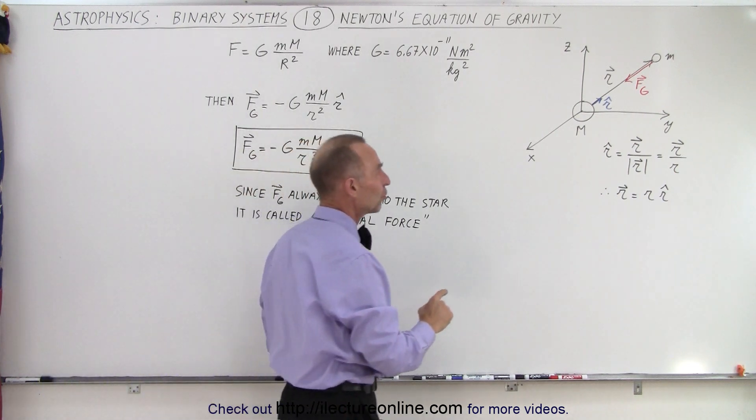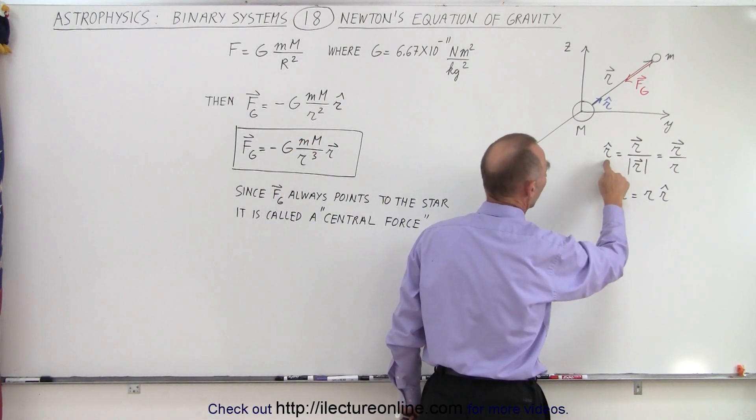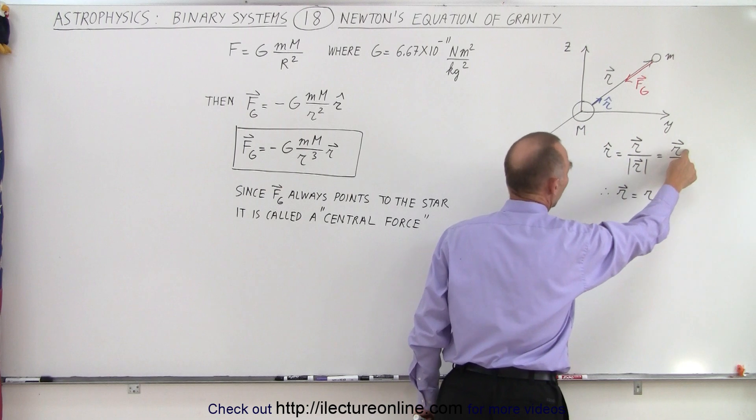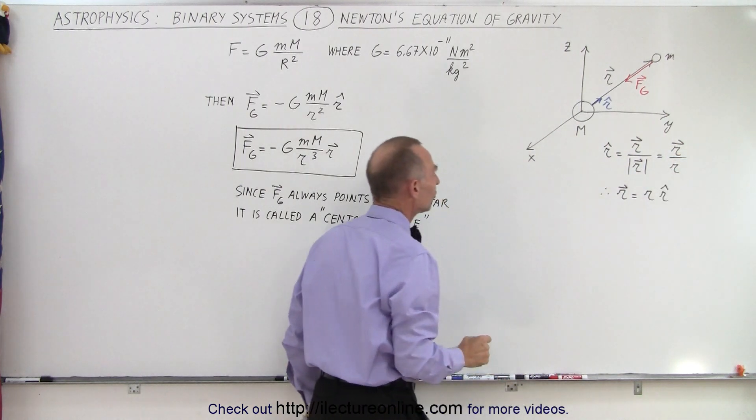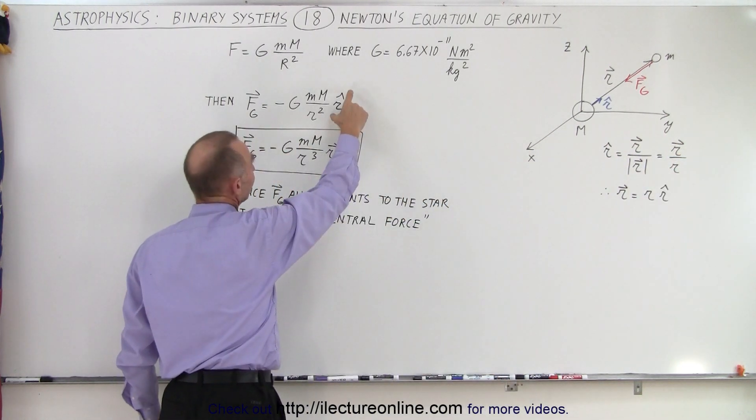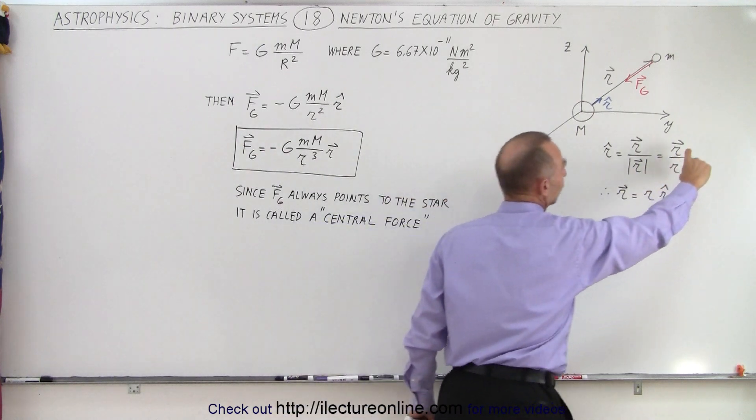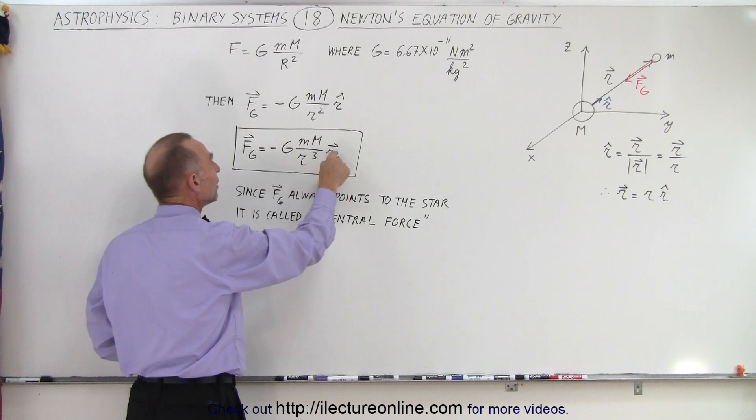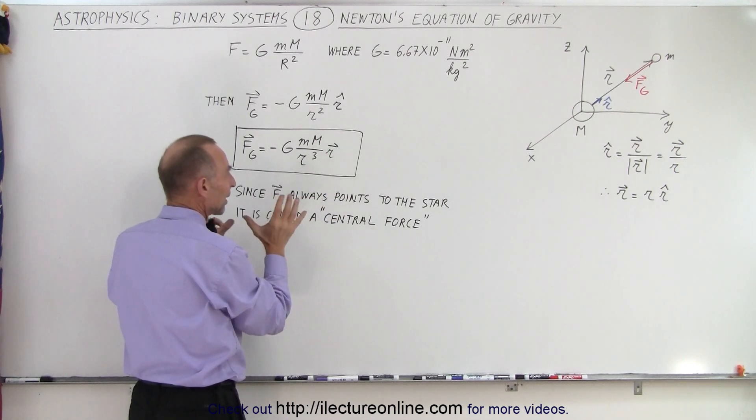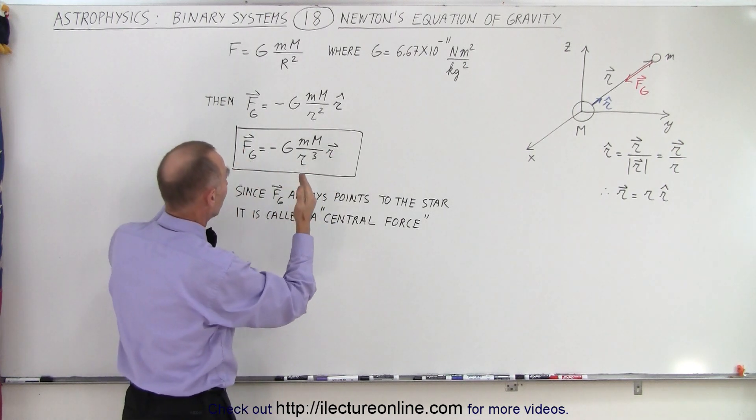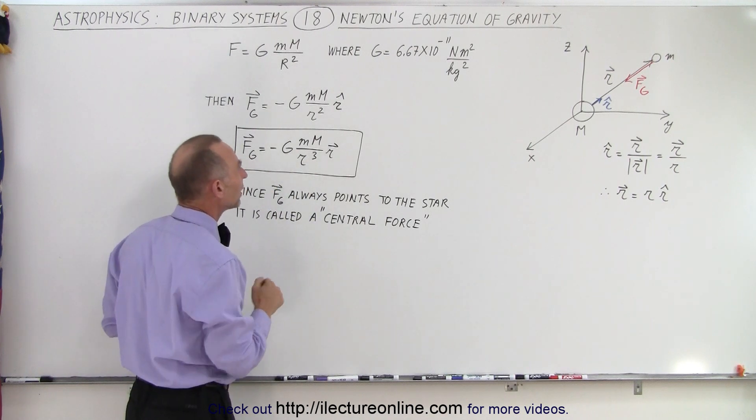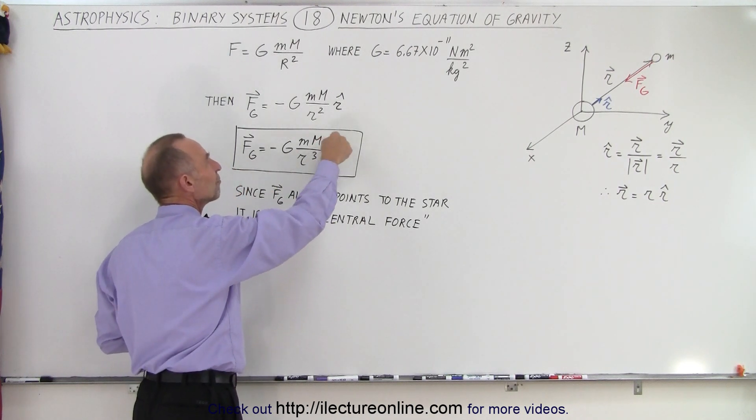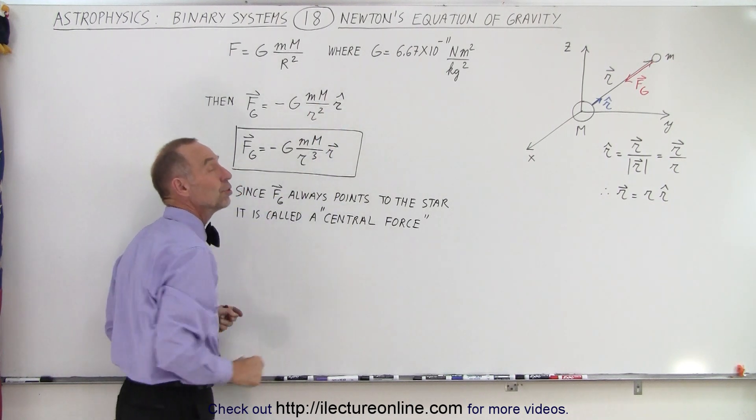And then if we substitute, if we now write R unit vector as being R divided by R like this, then we can substitute this by this quantity right here. And notice what happens now is we end up with an R cube in the denominator and the R vector there. Sometimes this causes confusion because you say, how do we get an R cube in the denominator? It's because the position vector is used rather than the unit vector.